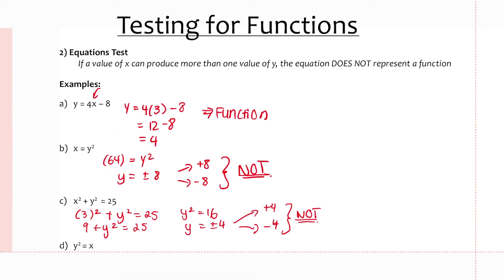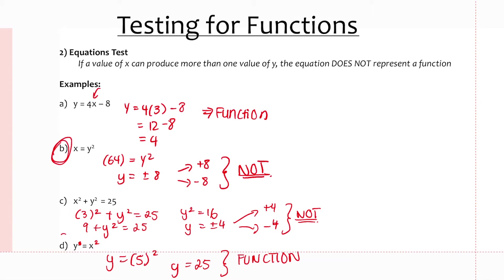For y equals x squared: if x equals 5, then y equals 25. That gives only one value, so this is a function. Note the difference between the previous example and this one — the equation x equals y squared gave two values, but y equals x squared gives only one unique value.